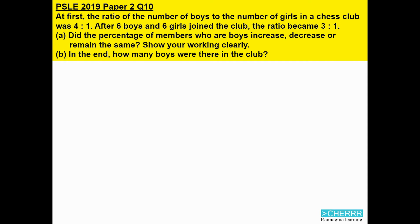ESLE 2019 Paper 2, Question 10. At first, the ratio of the number of boys to the number of girls in a chess club was 4 to 1. After six boys and six girls joined the club, the ratio became 3 to 1. Part (a): Did the percentage of members who are boys increase, decrease, or remain the same? Show your working clearly. Part (b): In the end, how many boys were there in the club?